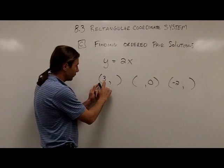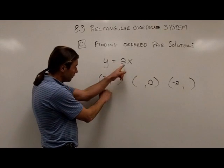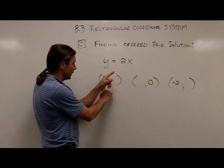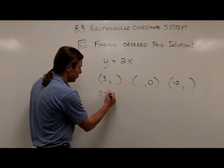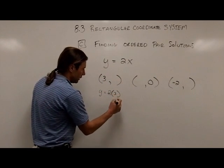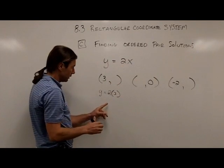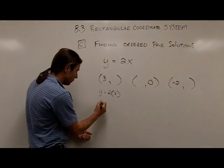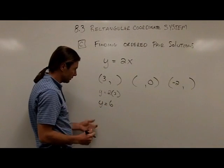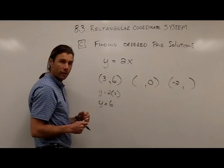So in this case, I have 3. And remember, the first spot is always the x value. So 3 is going to go in for the x value. So I would write y equals 2, again, open set of parentheses when I substitute that 3 in for x. And now what I have to do is just figure out what y has to equal. And in this case, y is going to equal 6 when I multiply the 2 and 3 together. So that is my other value in this ordered pair solution.